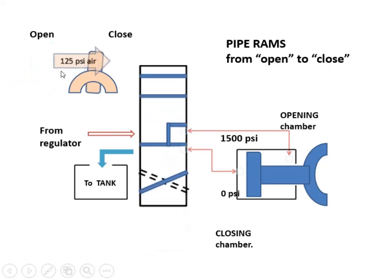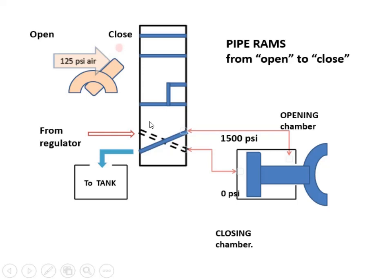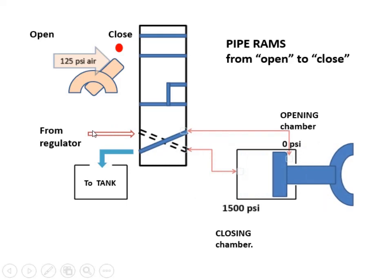the valve is then moved to closed position. The light will change, and the opening chamber is now connected to the tank, while the closing chamber is now connected to 1500 PSI. With hydraulic pressure now acting on closing chamber, the piston will be pushed in and the RAMs will be closed. The hydraulic fluid that was inside the opening chamber is sent back to the tank on control unit and will be reused.